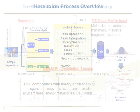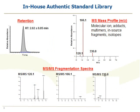The library contains very specific information about each authentic standard that is run. We record the retention time, the MS mass profile on the LC including preferred adducts, preferred in-source fragments, and all isotopes. We also document all of the MS-MS fragmentation for the LC and EI spectra for the GC — including the MS-MS spectrum of the dimer, the molecular ion, and the in-source fragment. All of that information is documented when we run the compound to generate the library.